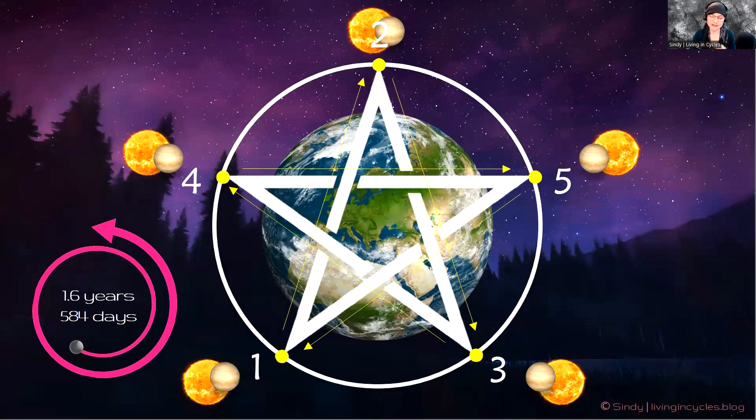And it takes 8 years to form this cosmic pentagram. And it happens all over again and again and again. So Venus and the Sun, in alignment with the Earth, will create this pentagram.